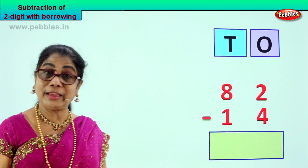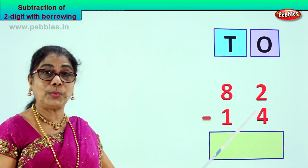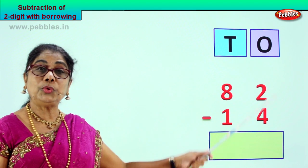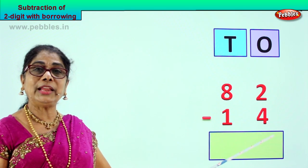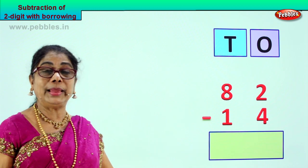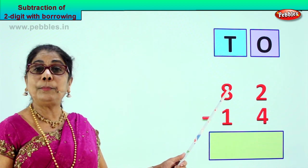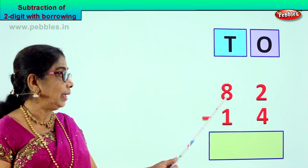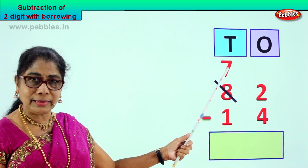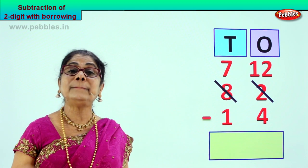Here we have 82 minus 14. 8 tens, 2 ones, 1 ten, 4 ones. 82 take away 14. First, go to the ones place — you have 2 ones and 4 ones. You cannot take away 4 from 2 which is small. The 2 is small, 4 is big, so you cannot minus. Therefore we borrow 1 ten from the 8 tens. From the 8 tens we take away 1 ten — the remaining is 7 tens. And this 1 ten plus 2 ones becomes 12.